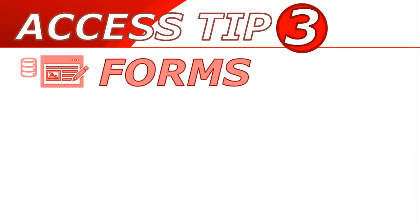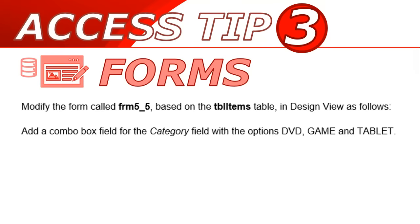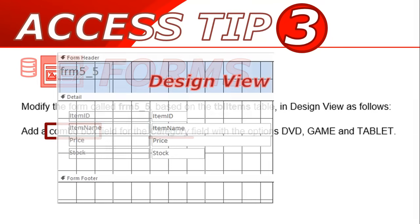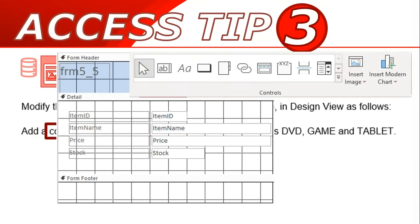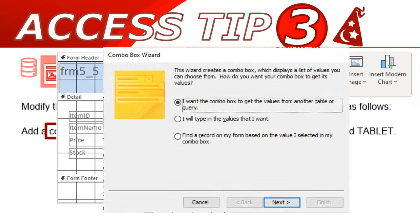The next tip is about forms. They often ask you to add a combo box or a list box for a particular field — in this case, the category field. Go to Design View of your form. At the top, you'll see the available controls; move your mouse over them to find the combo box. Drag it onto your form, and the moment you do, the Combo Box Wizard will pop up and take you step by step through what you need to do. In this case, we just want to type in the values.